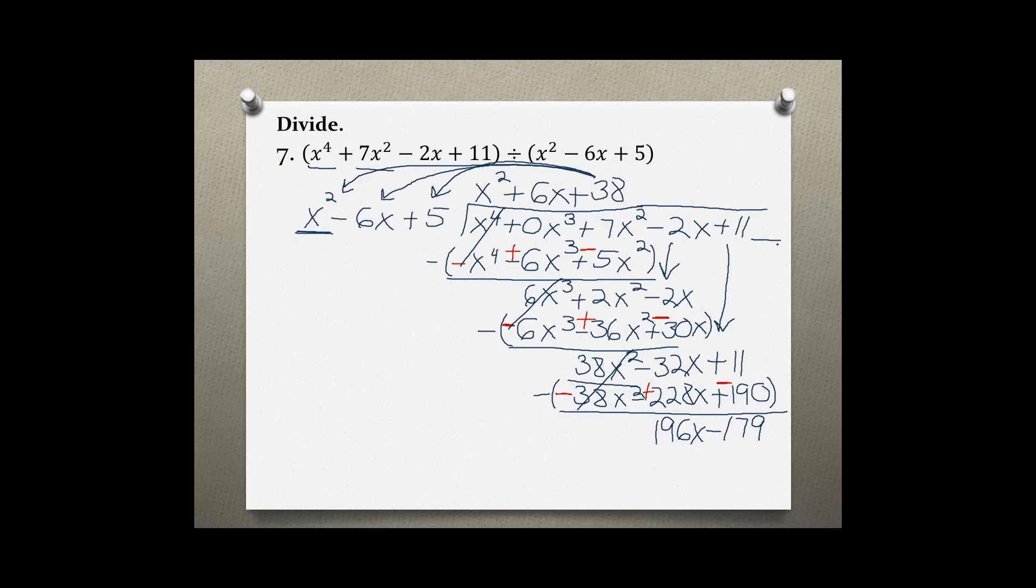We have nothing left in our dividend, but we do have a remainder, because this does not equal 0. So now we have to rewrite our answer, starting right here. x squared plus 6x plus 38, and then plus our remainder, which is 196x minus 179, over the divisor, which is x squared minus 6x plus 5.